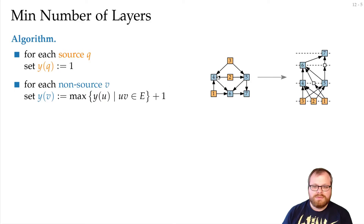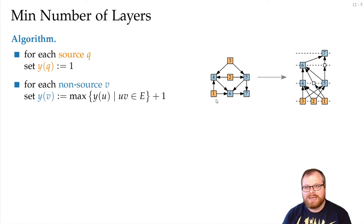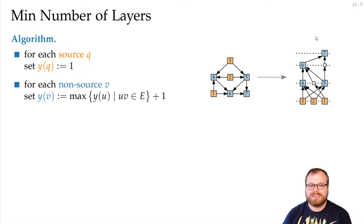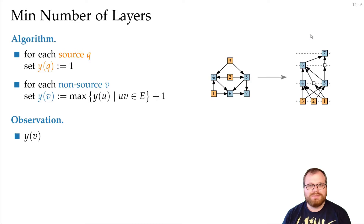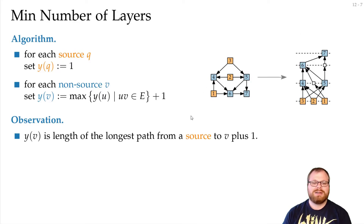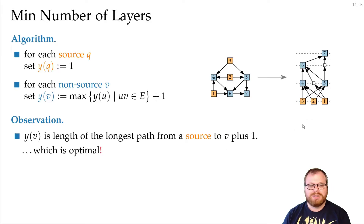For example, vertices 4 and 5 only have incoming orange neighbors, so they are placed on layer 2. Vertex 6 has incoming edges from 4 and 5, so it is placed accordingly. Vertex 7 has one from 6. The observation is that the y-coordinate of every vertex is just the length of the longest path from a source to v plus 1, and this is actually optimal — we cannot do any better.